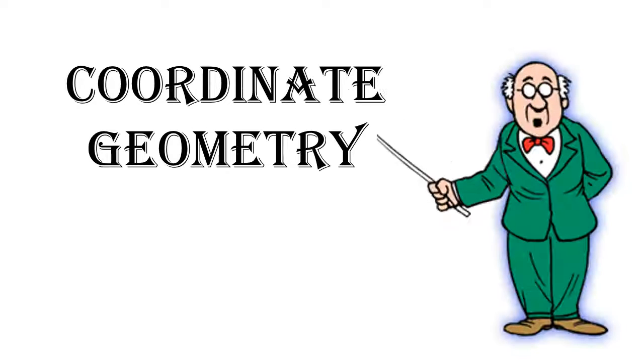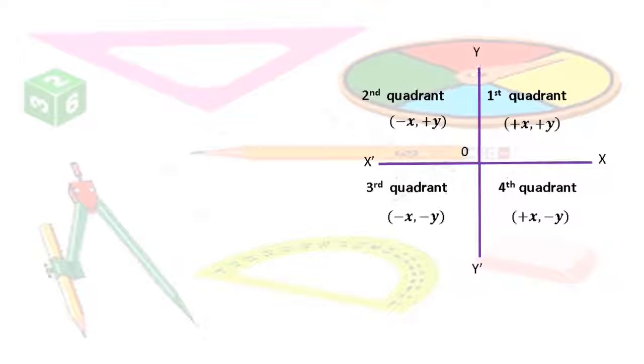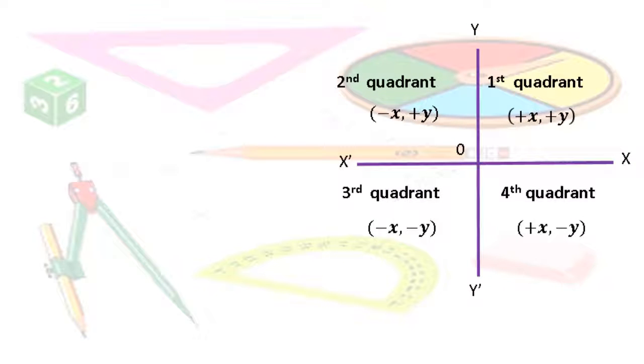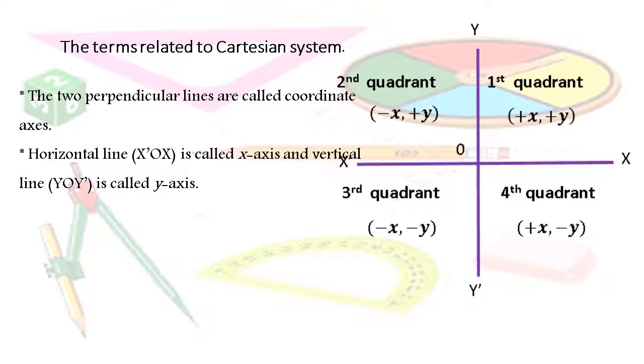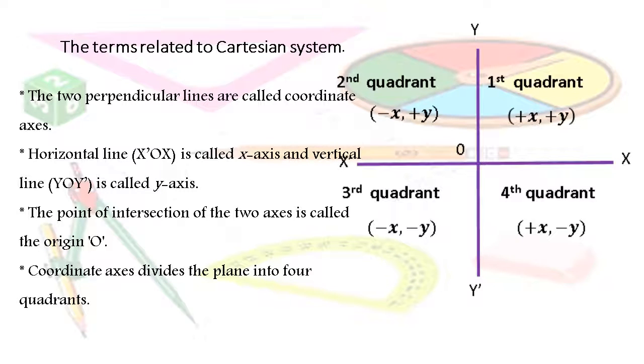Coordinate Geometry. The terms related to Cartesian system: The two perpendicular lines are called coordinate axes. Horizontal line X'OX is called the x-axis and vertical line Y'OY is called the y-axis. The point of intersection of the two axes is called the origin O.